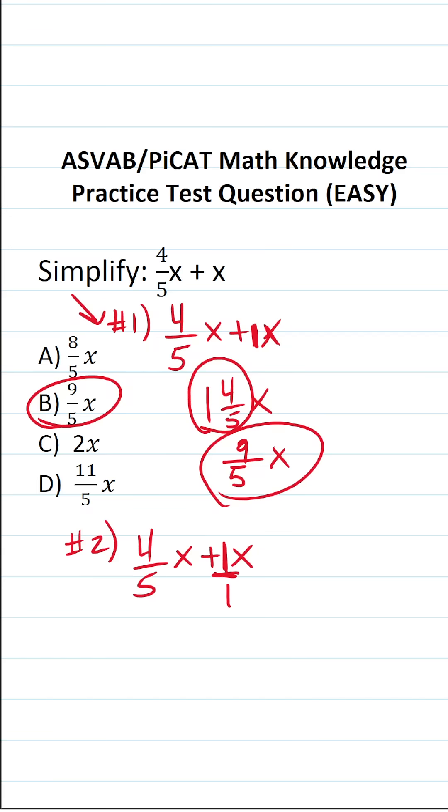So I can write one as a fraction by placing it over one. One divided by one is one. How could I rewrite one over one x such that it has a denominator of five so I can add these two? Well, that's actually pretty easy to do. I can simply make this five over five x. Five divided by five is just one. All right, so those are equivalent.